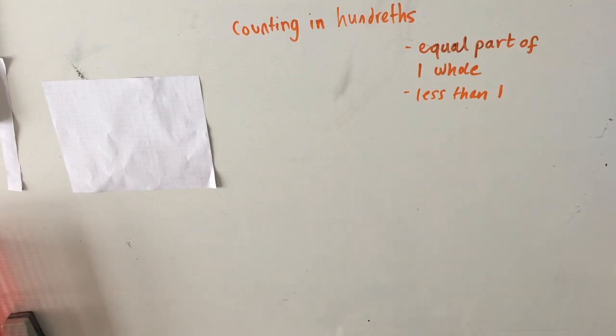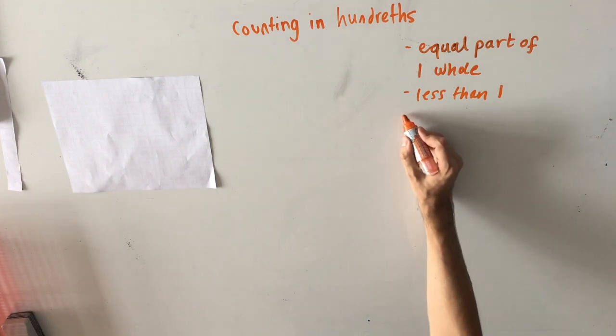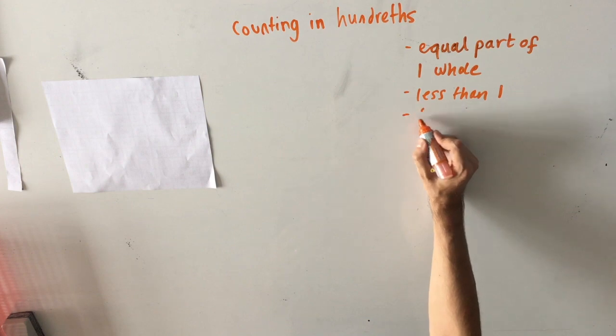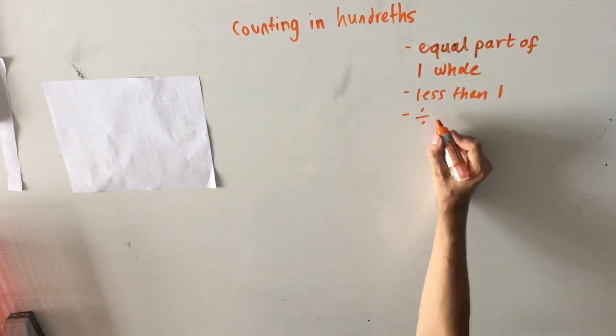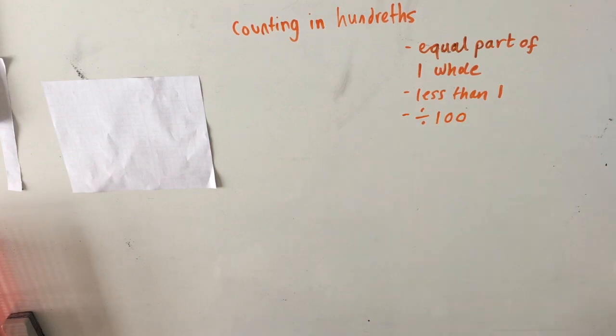We know what the parts are based on what we've divided that whole into. And in this case, we're going to be dividing it into one hundredths, which links to dividing by one hundred.